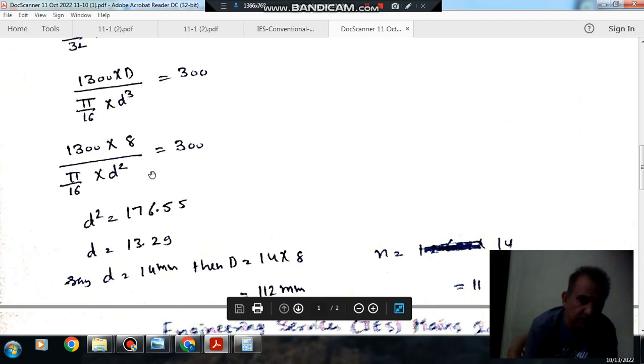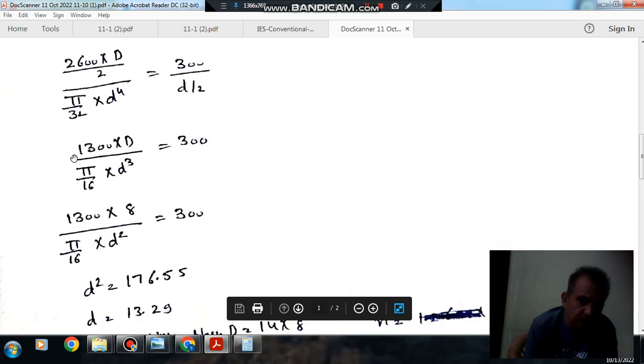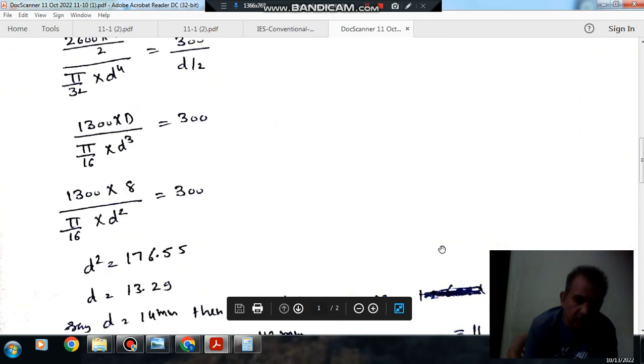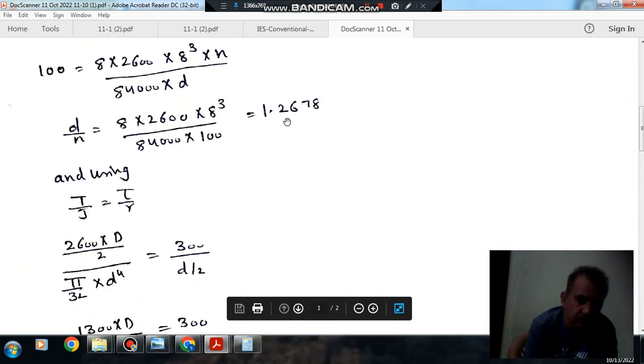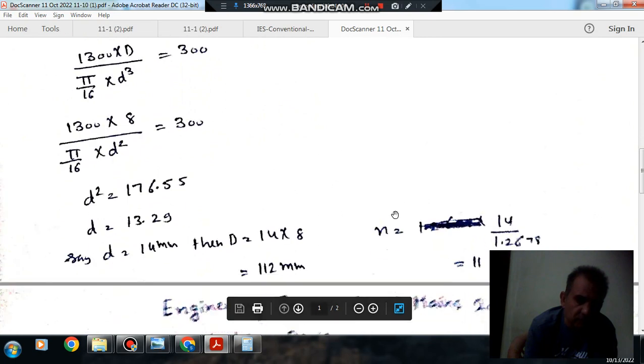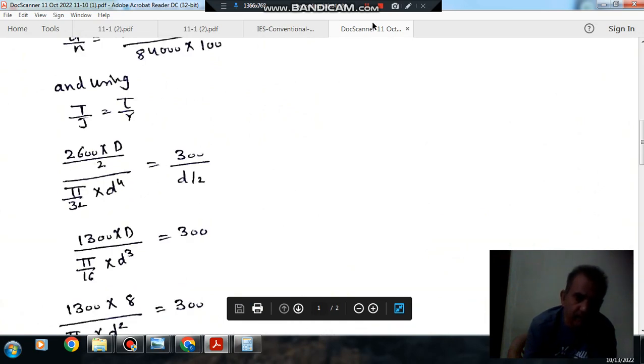And number of turns will be from this. We have d by n is 1.267, so n will be d divided by d by n. So number of turns will be 11.